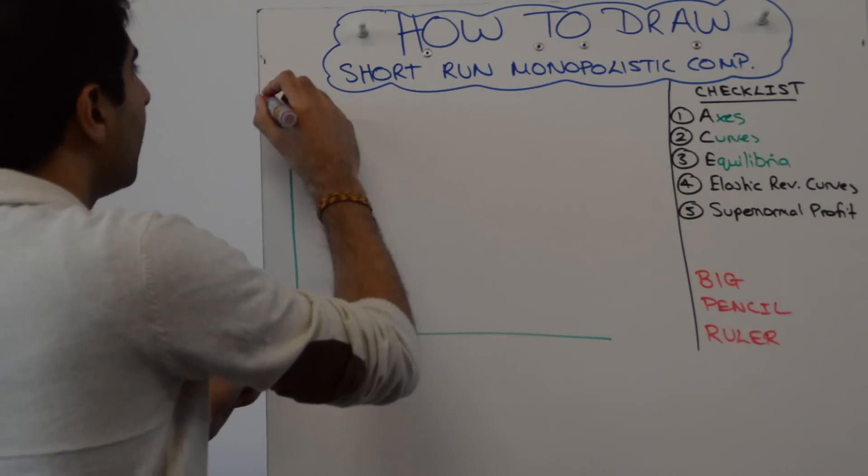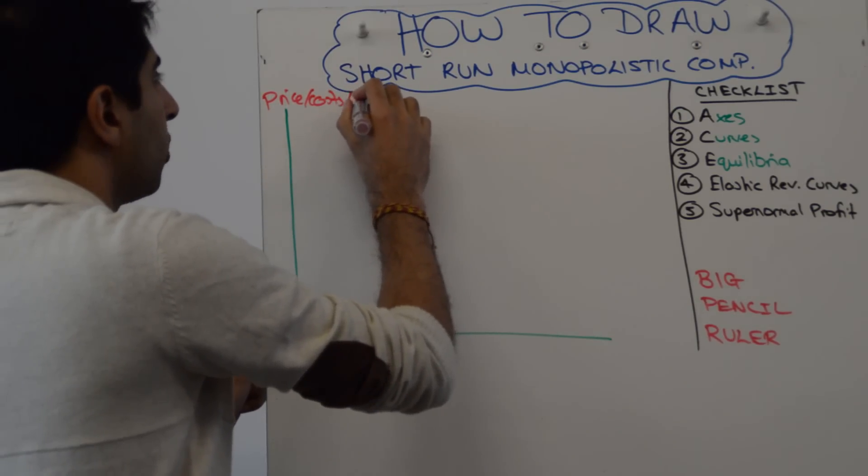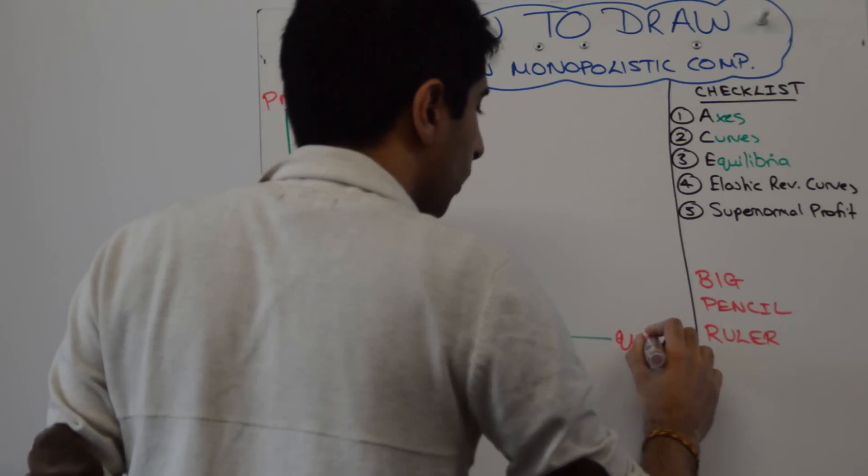On the y-axis we have to show price, costs, and revenue. We can show all three. And on the x-axis quantity.